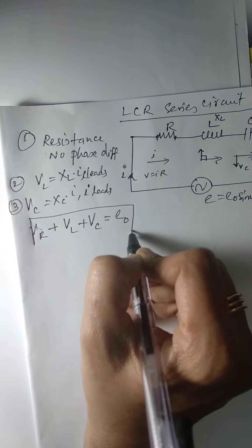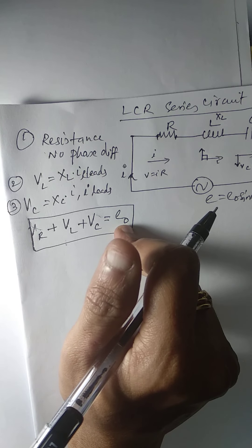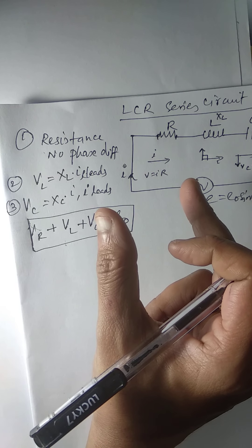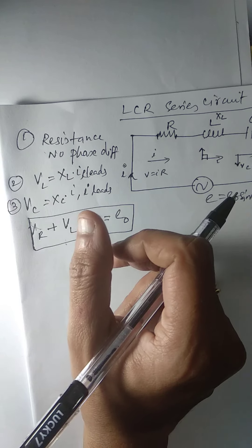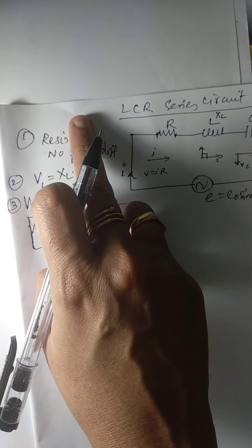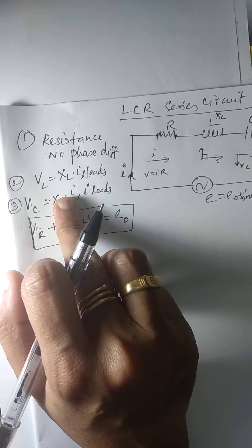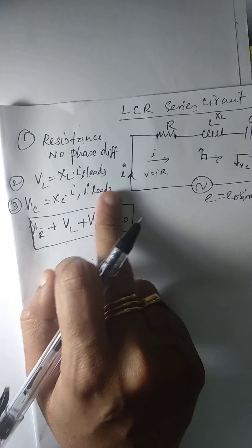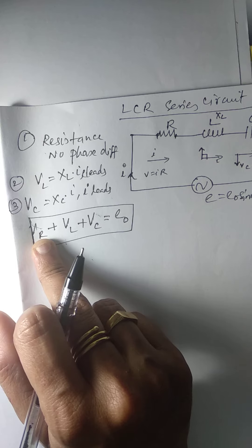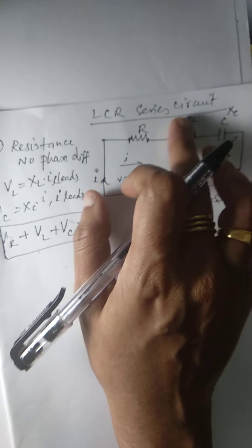These three maximum values together give E₀. Since they are at different phases, we represent them with a phasor diagram. In R there is no phase difference. In XL the EMF leads by π/2 relative to I₀. In XC the current leads by π/2. This gives the total EMF as V = VR + VL + VC, representing the potential differences across each component.